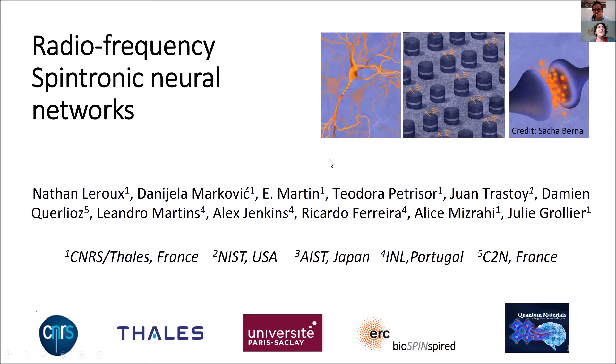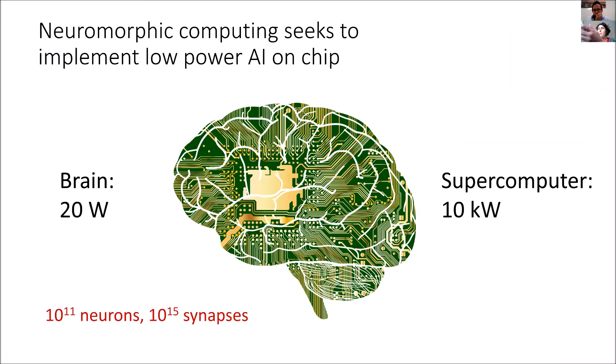The goal of neuromorphic computing is to implement a low power artificial chip. The reason for that is that AI today has made incredible progress, but it's consuming too much energy. It's an environmental problem and also this energy consumption actually slows down the computation.